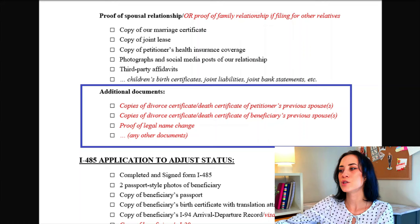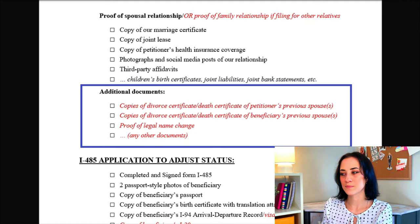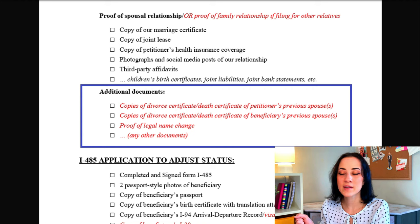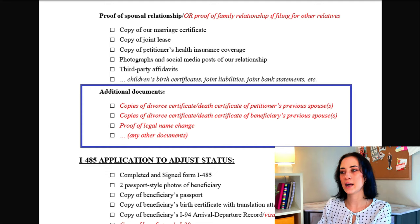Here is where you may want to include some kind of list of additional documents that you think will help your case — such as copies of divorce certificates or death certificates if any of you have ever been married previously, or proof of any legal name change. This is where you can include these documents — anything else that you feel will help your case.